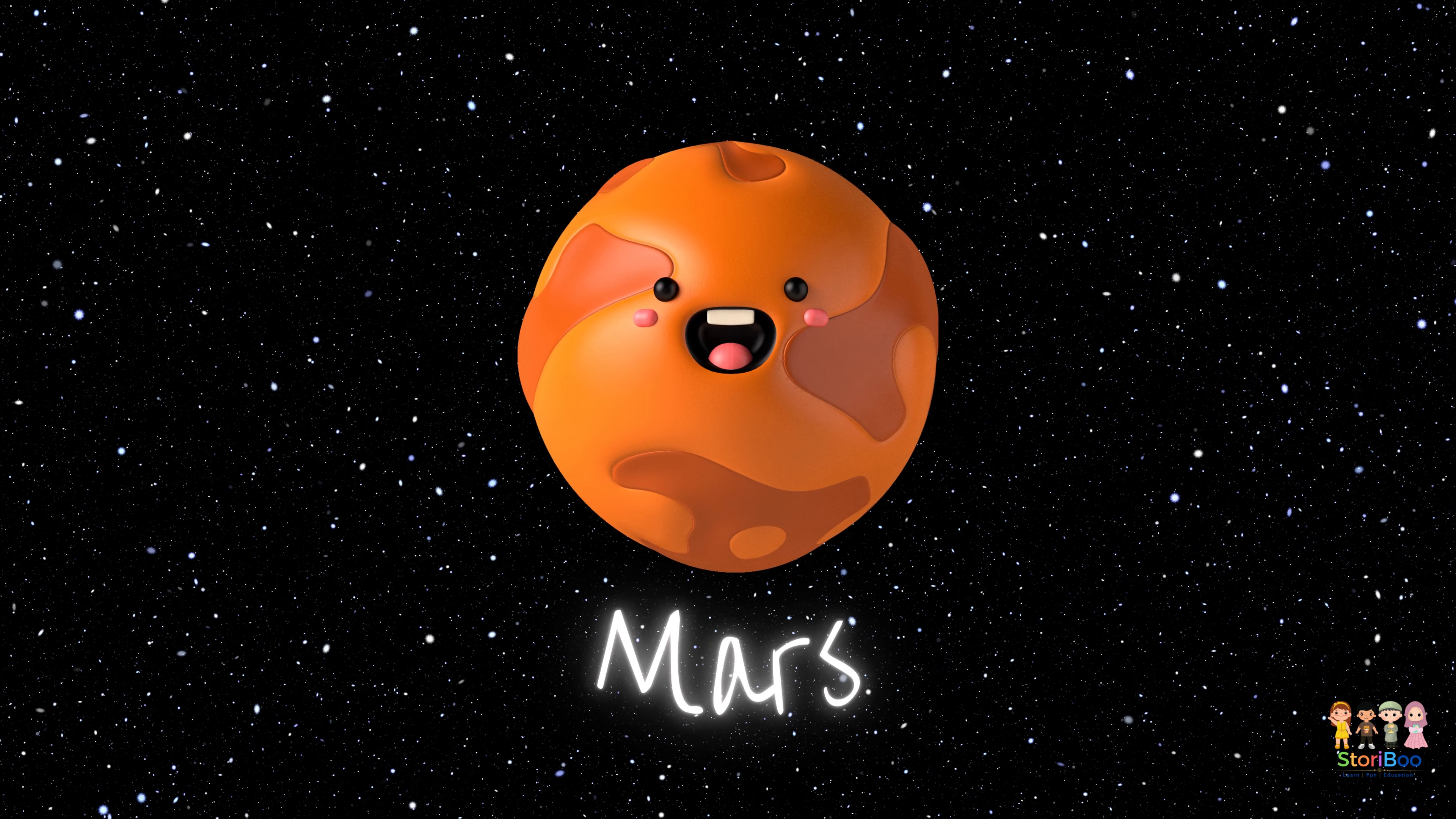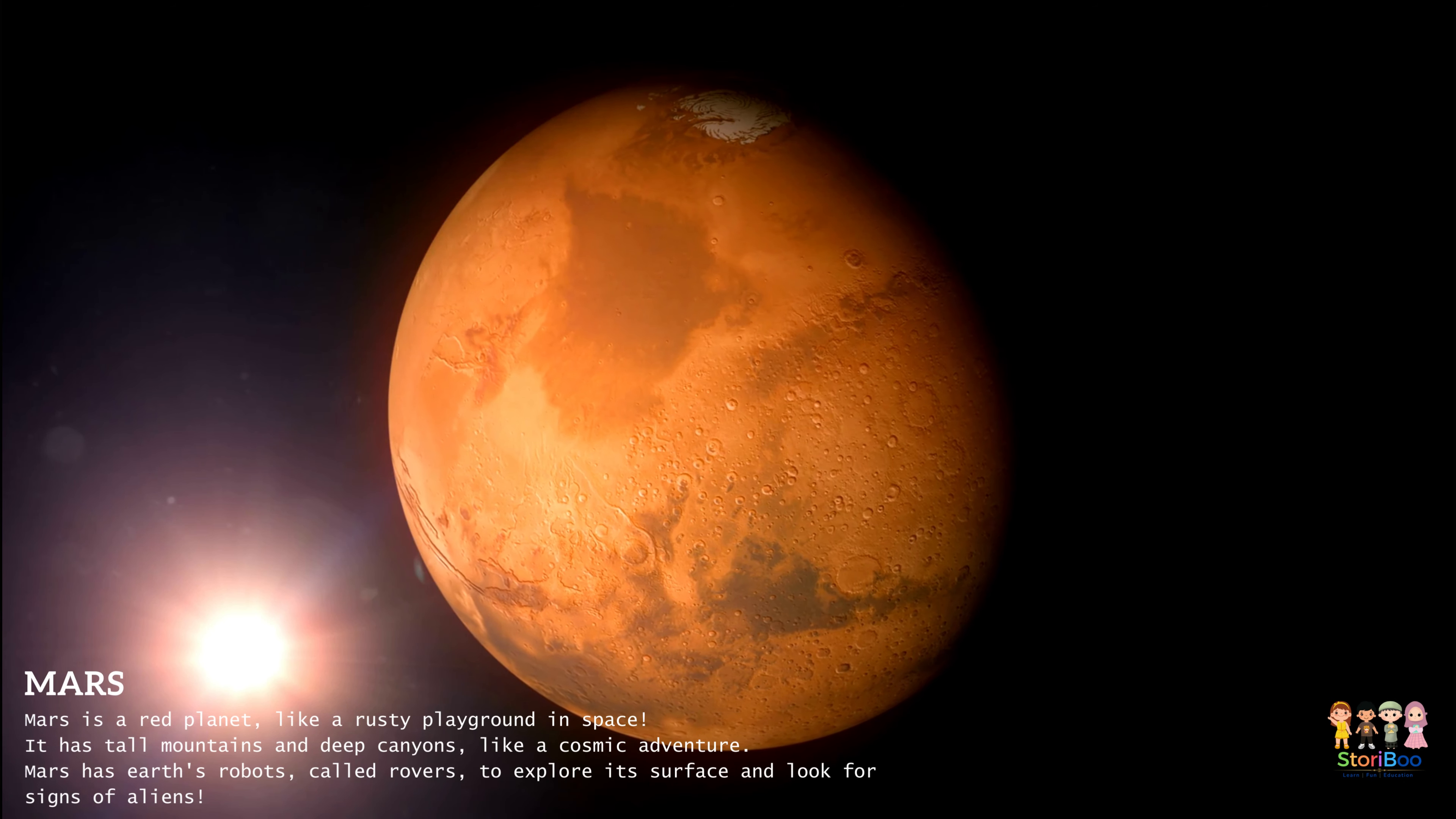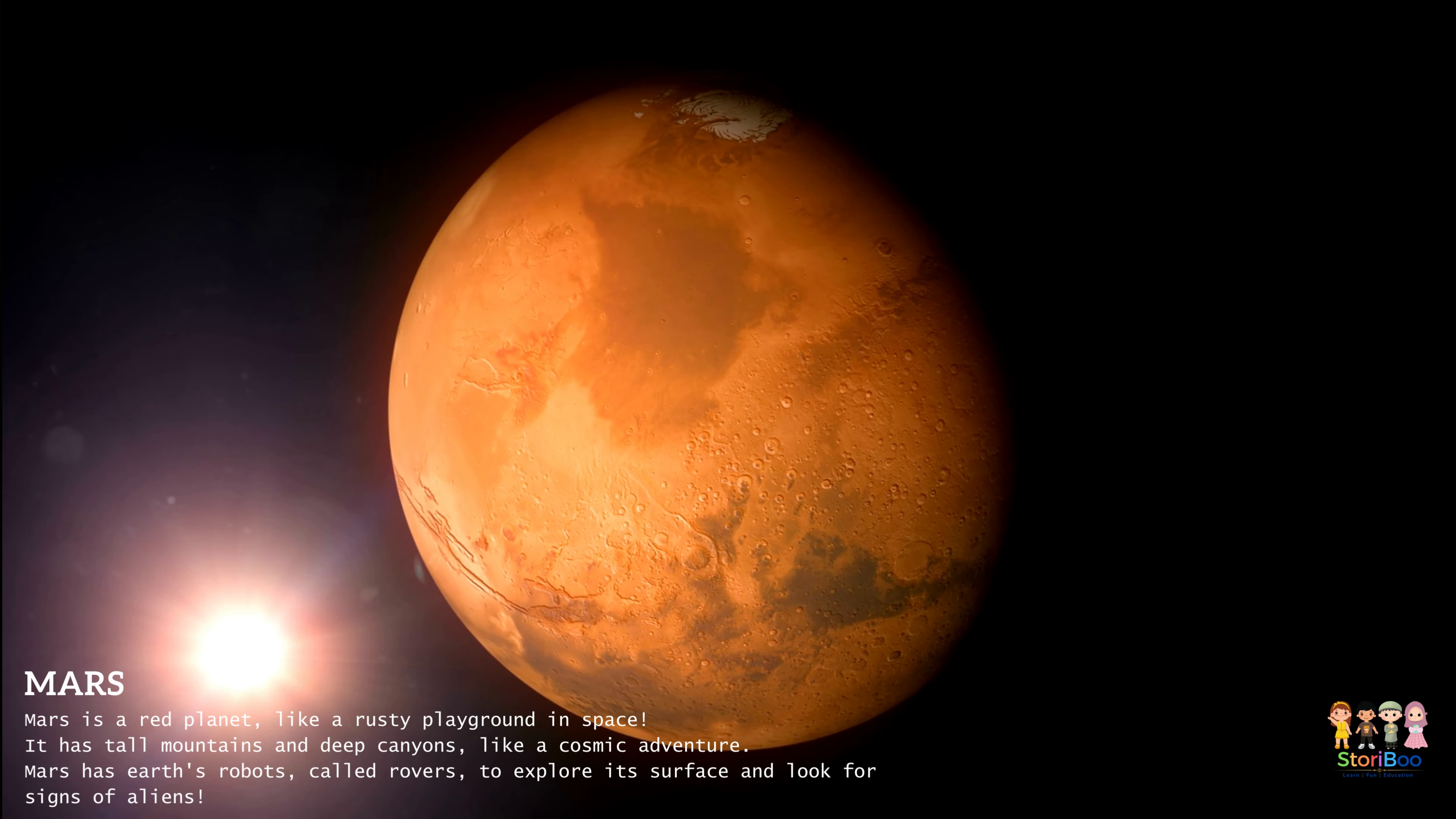Mars is the red planet like a rusty playground in space. It has tall mountains and deep canyons like a cosmic adventure. Mars has Earth's robots called rovers to explore its surface and look for signs of aliens.